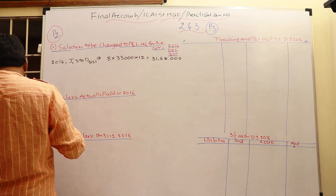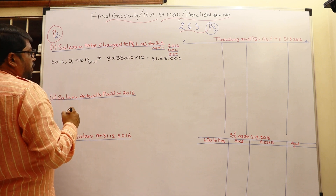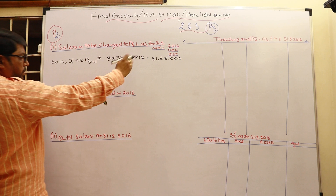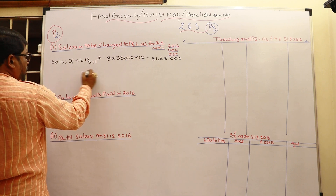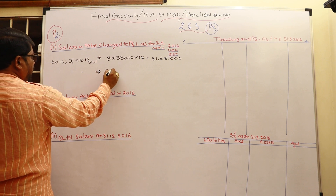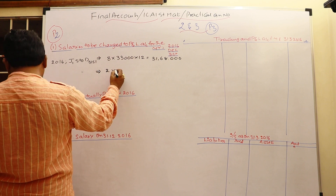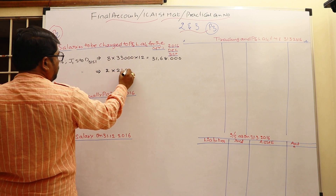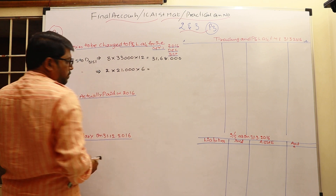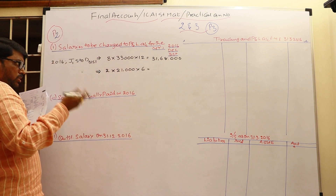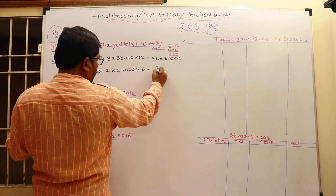₹31,68,000 covers 8 employees for the full year — 11 months paid, one month outstanding, but the total is taken. For the two trainees hired from July, they work for six months. At ₹21,000 per month for 2 trainees over 6 months — five months paid, one month outstanding — the total is ₹2,52,000. So the total salary charged to P&L account is ₹34,20,000.